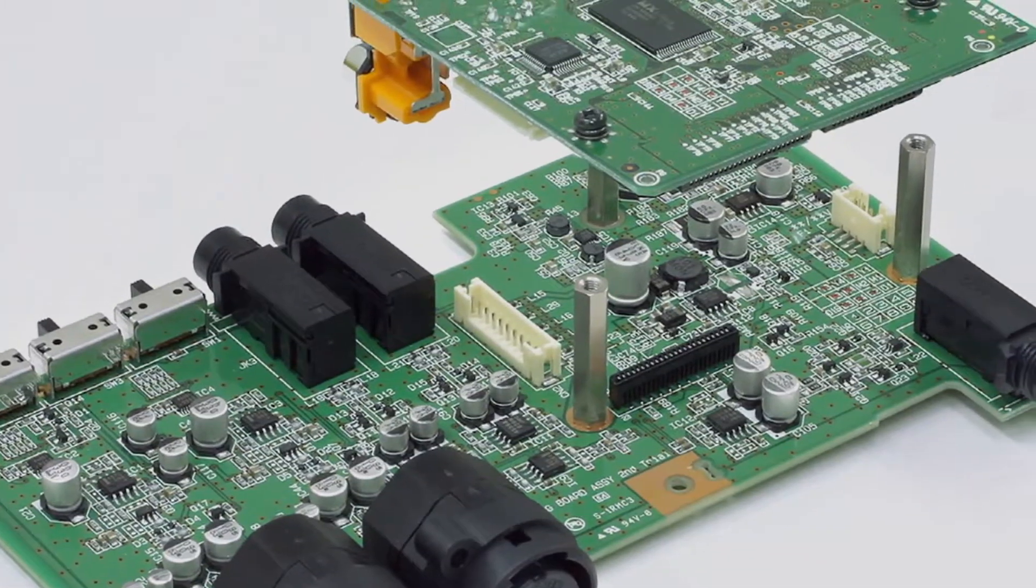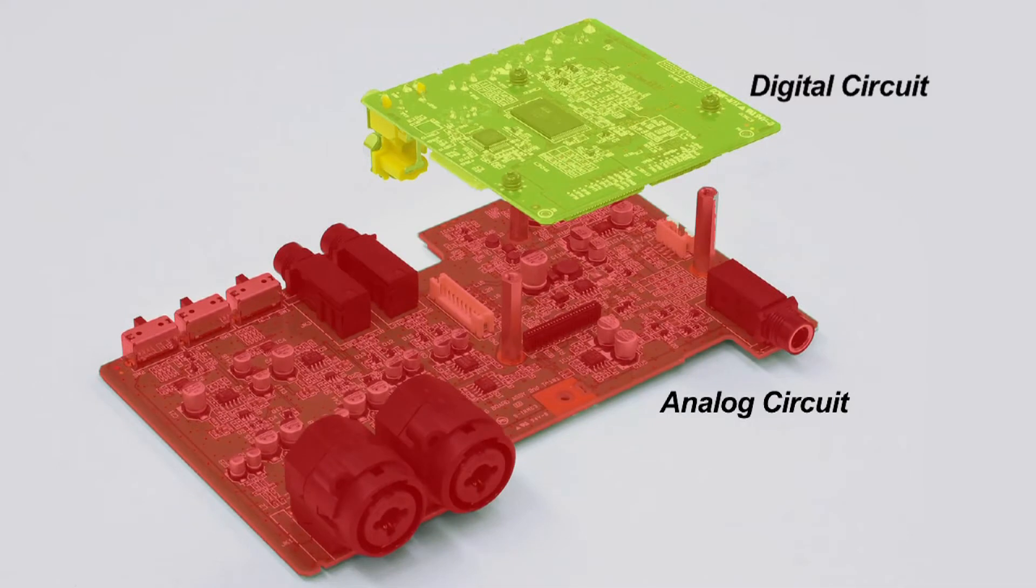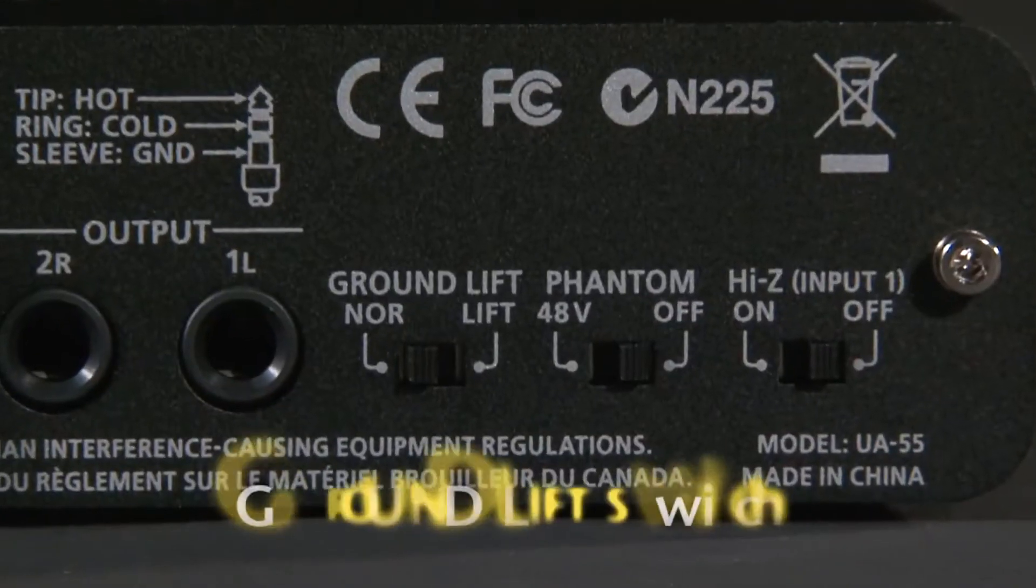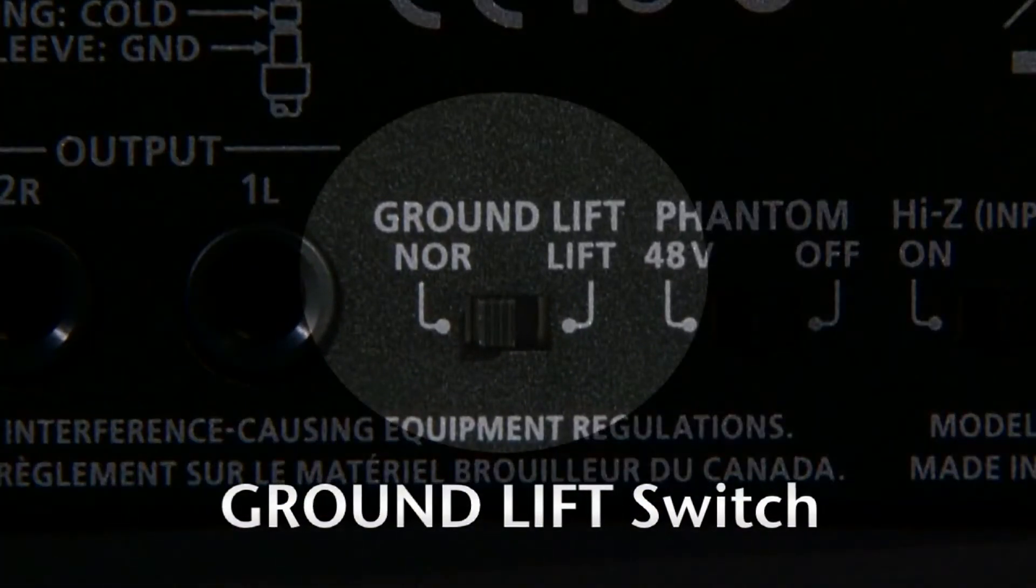To eliminate noise and crosstalk, digital and analog sections of circuitry are completely segregated. Quad Capture can provide direct-box functionality, essential for noise-free live stage use.